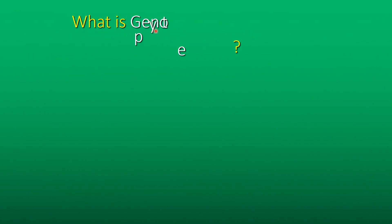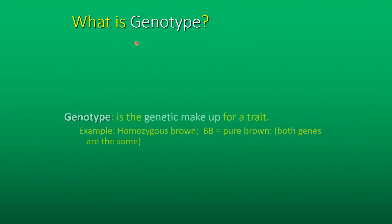What is genotype? Genotype is the genetic makeup for a trait. Example: homozygous brown — BB — pure brown. Both genes are the same.